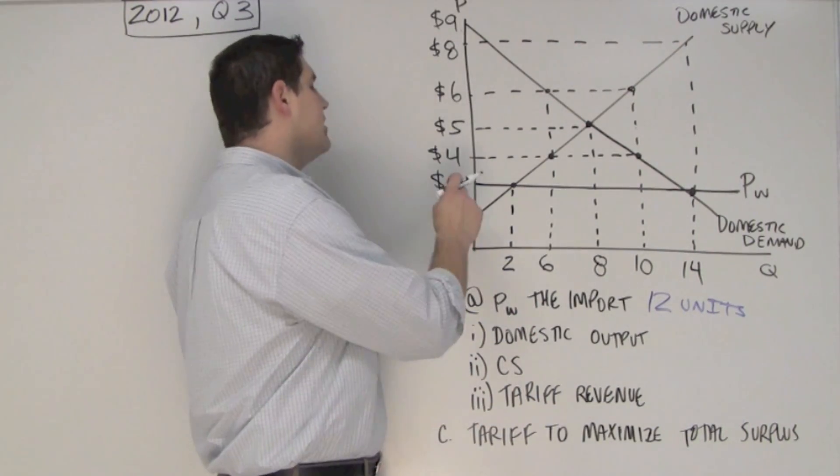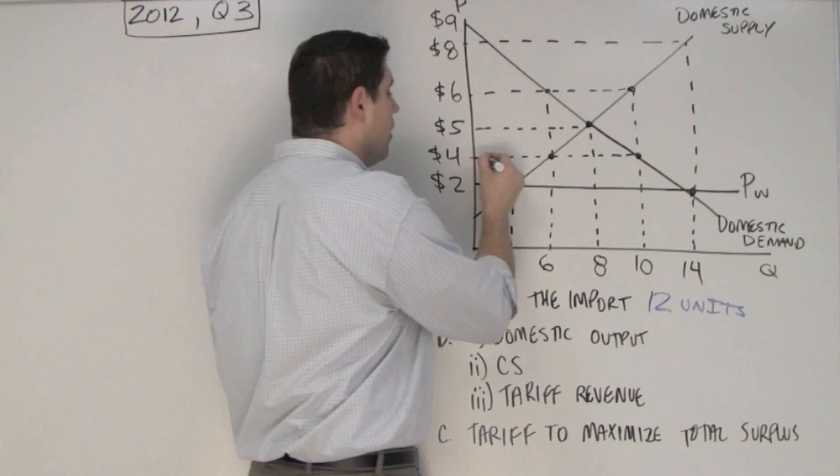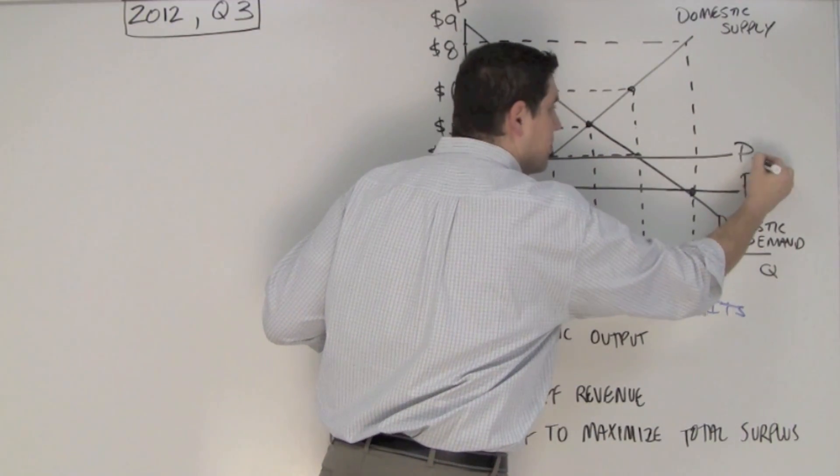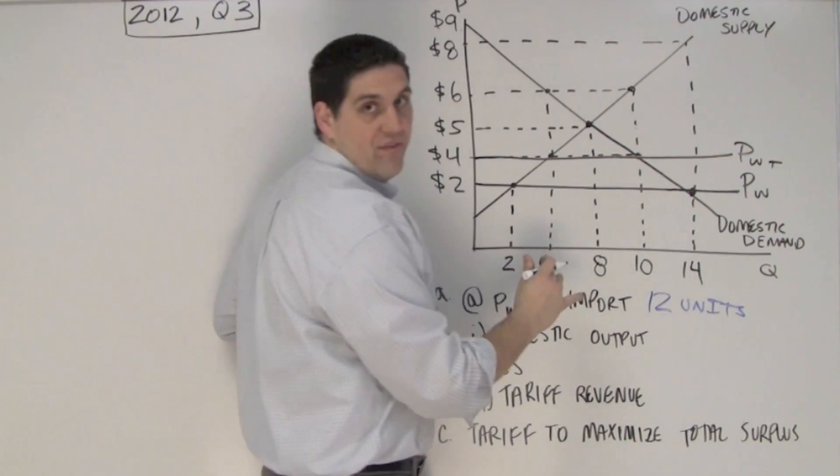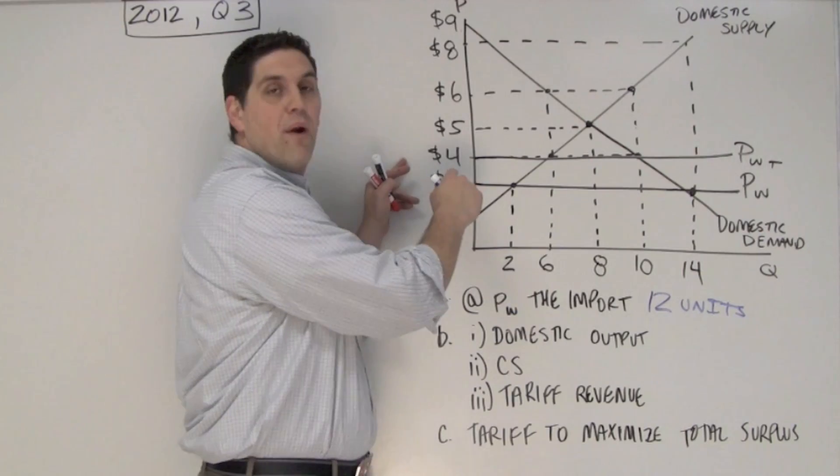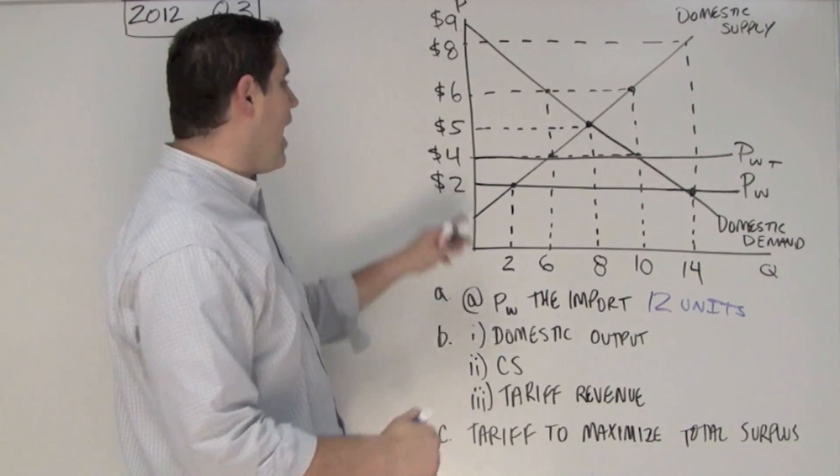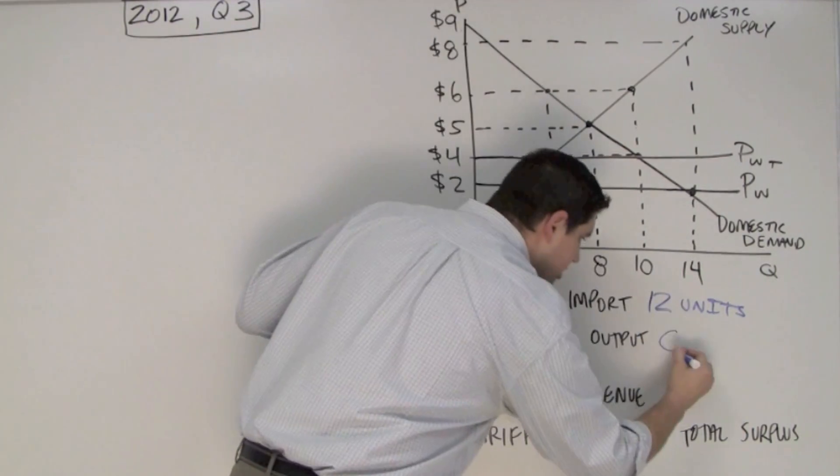In Part B, it says there's a tariff that increases the world price from $2 all the way up to $4. So this is the price, world with that tariff. So if the government increases the world price with the tariff, the domestic output is going to be 6, 6 units.